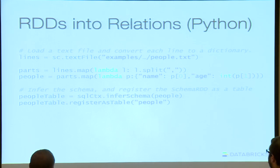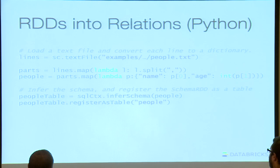Once you've got a schema RDD or table, all you have to do is call register as table, and it immediately becomes accessible to SQL functions. Just like everything else in Spark, all of this is lazy — you're just providing the lineage or transformation that allows this data to be viewed as a SQL table.